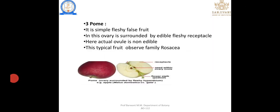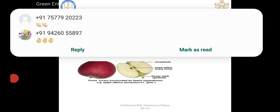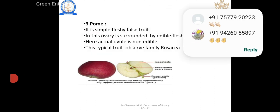Pome — a simple fleshy false fruit in which the ovary is surrounded by an edible fleshy receptacle; the actual ovary is non-edible. This is a typical fruit of the family Rosaceae.